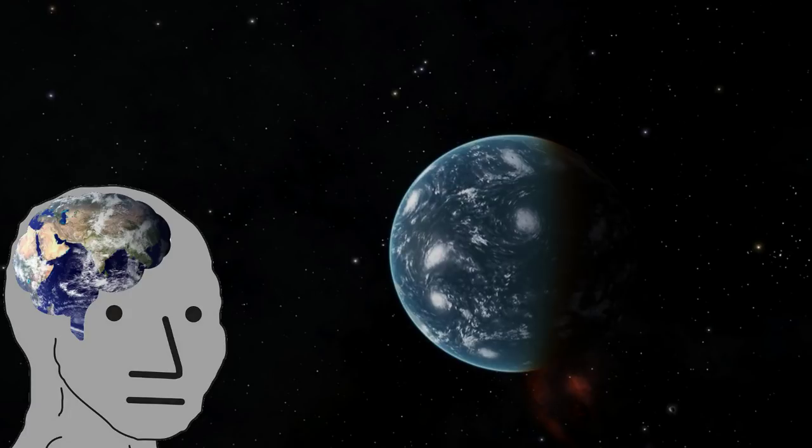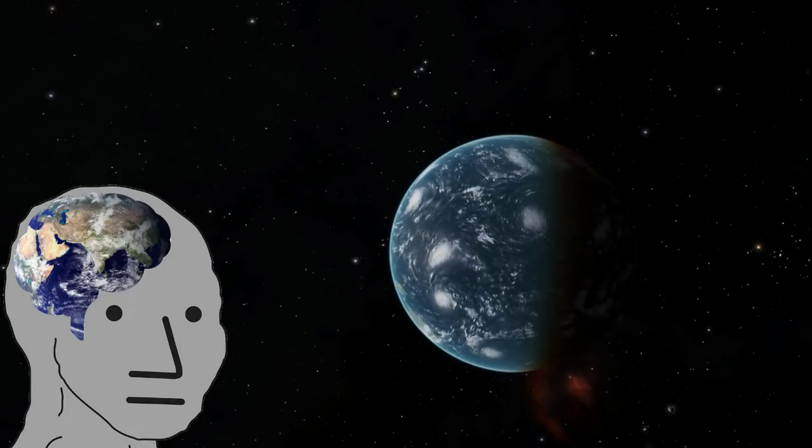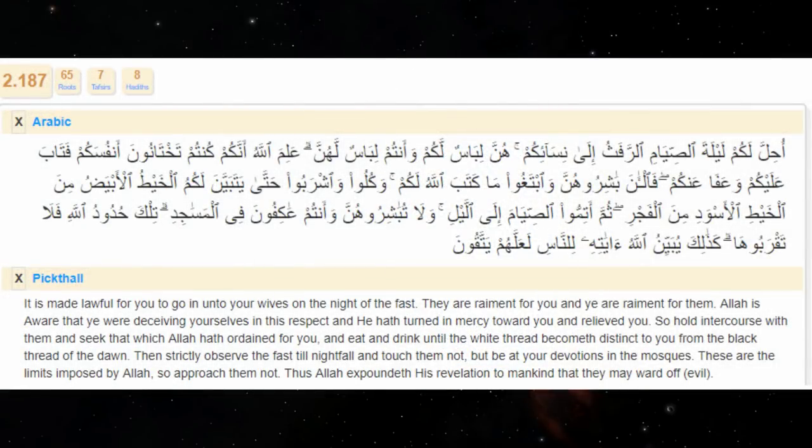Moving on. Quran 2:187: 'It is made lawful for you to go in unto your wives on the night of the fast. They are raiment for you and ye are raiment for them. Allah is aware that you were deceiving yourselves in this respect and he hath turned in mercy toward you and relieved you, so hold intercourse with them and seek that which Allah hath ordained for you. And eat and drink until the white thread becometh distinct to you from the black thread of the dawn, then strictly observe the fast till nightfall.'